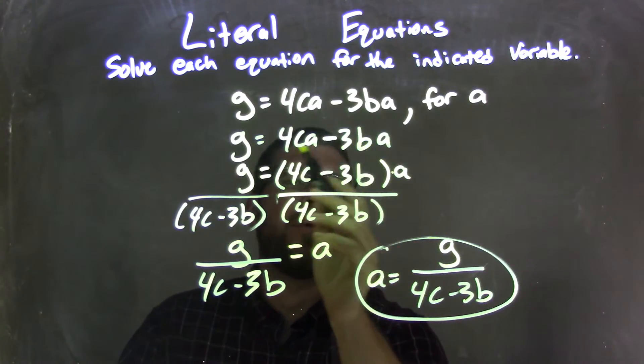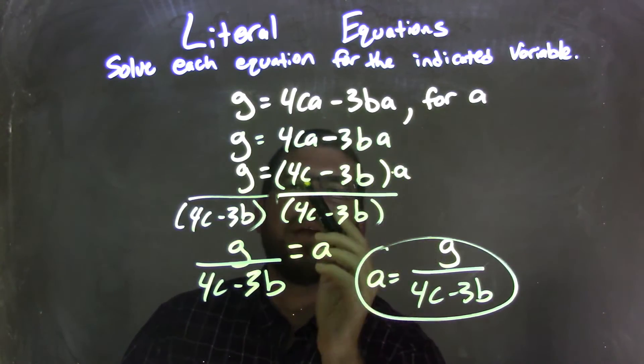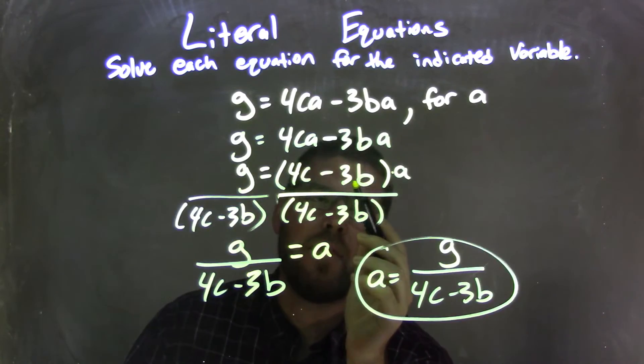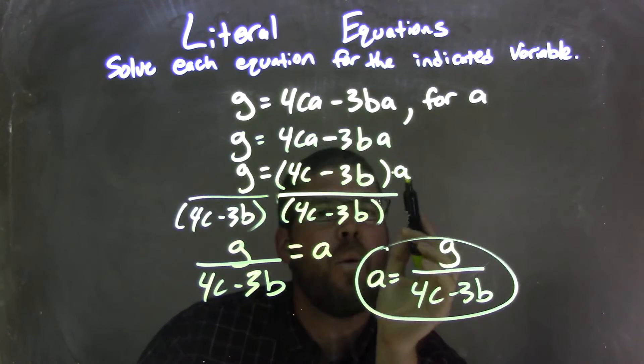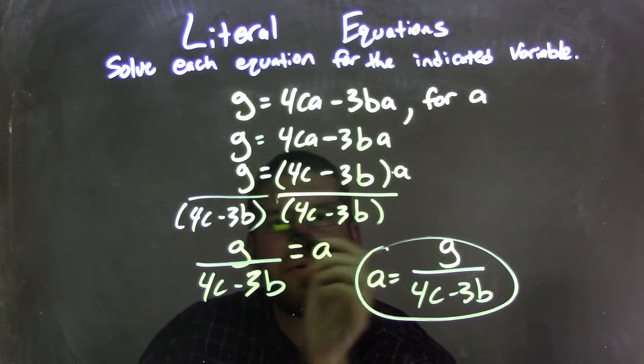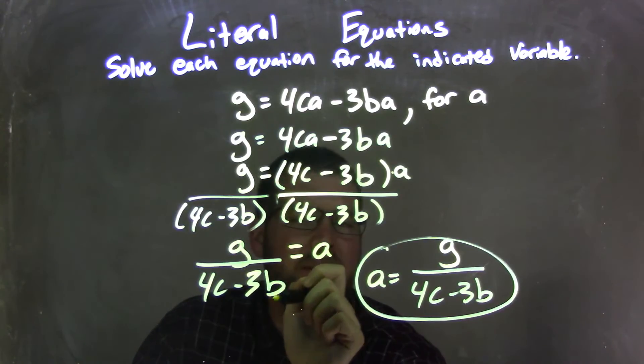and then I notice I can pull out an A from both parts here. By doing that, I'm left with 4C minus 3B in parenthesis, all multiplied by A. What that allows me to do, then, is divide both sides by 4C minus 3B, giving me A by itself on the right, and on the left, G over 4C minus 3B.